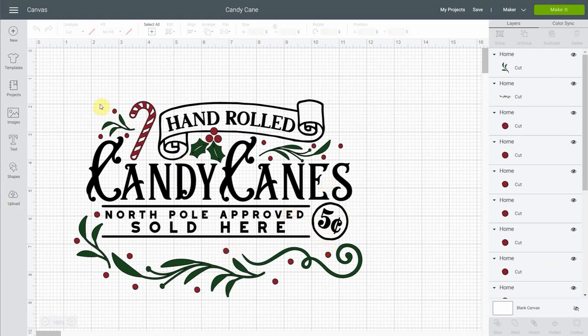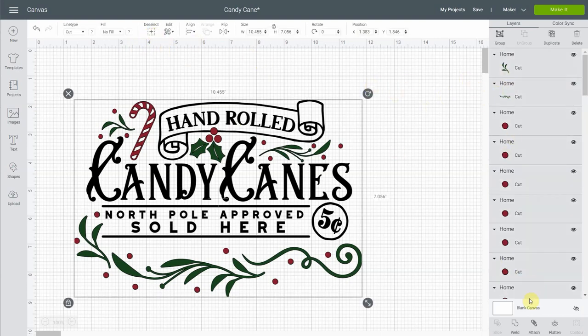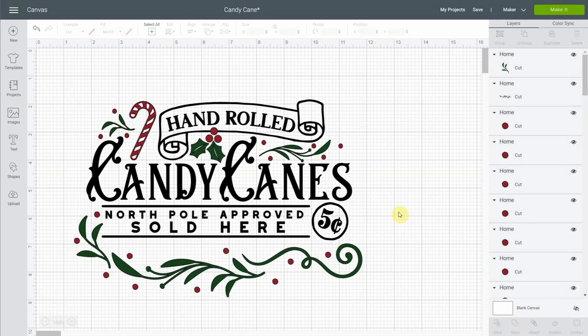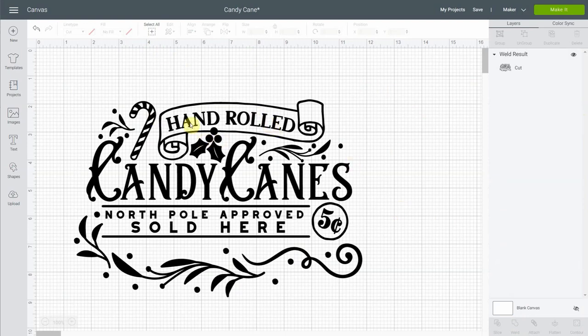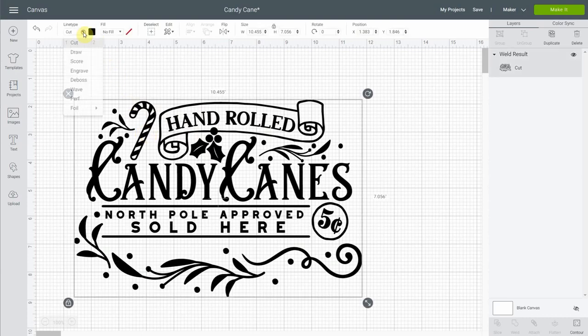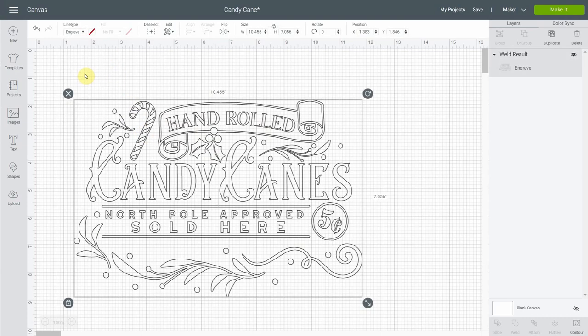So the first thing we're going to do, because you see we have all of these layers right here, is we're going to weld them together because it's going to get very complex if we leave it like that. So let's select them all and click on weld. Now we need to wait. So here we are. The color is not really important because what we're going to do right away is select this shape and put it to engrave so that we don't forget.